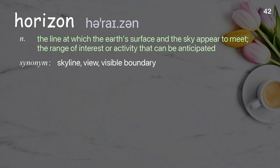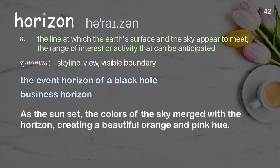Horizon: the line at which the earth's surface and the sky appear to meet; the range of interest or activity that can be anticipated. Examples: the event horizon of a black hole, business horizon. As the sun set, the colors of the sky merged with the horizon, creating a beautiful orange and pink hue.